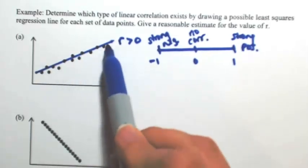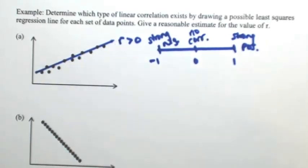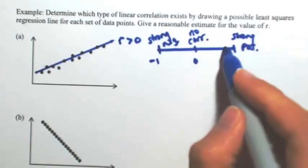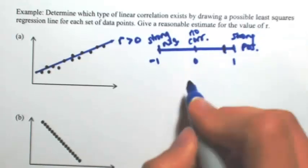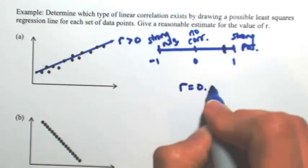So this one is pretty strong. A lot of points are pretty close to that line. So I'm going to place that pretty close to one. I think a reasonable estimate would probably be about 0.9.